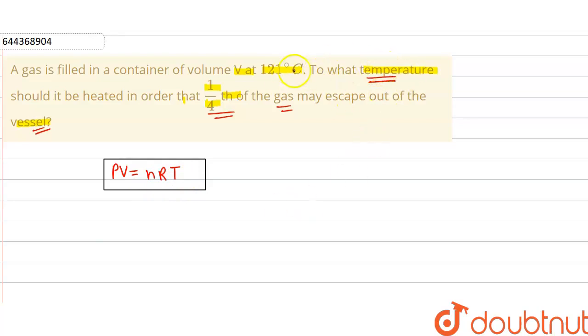Here in this question we have given two values. First is temperature and second is the number of gases or the amount of gas. So here n is representing the amount of gas and T is representing the temperature.